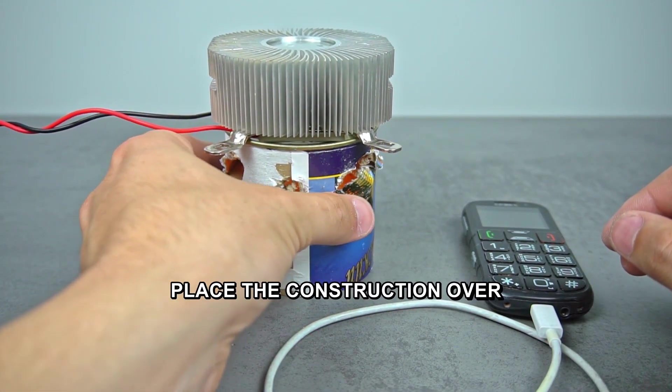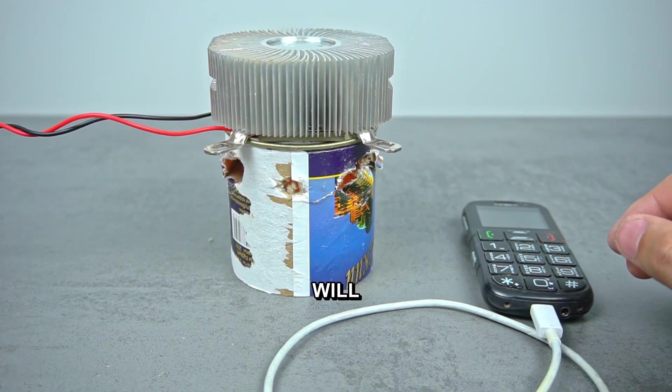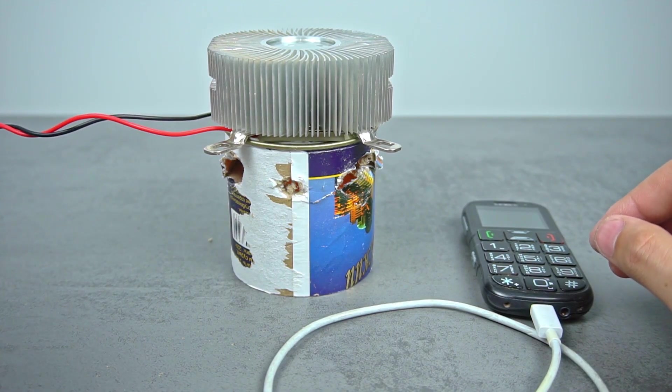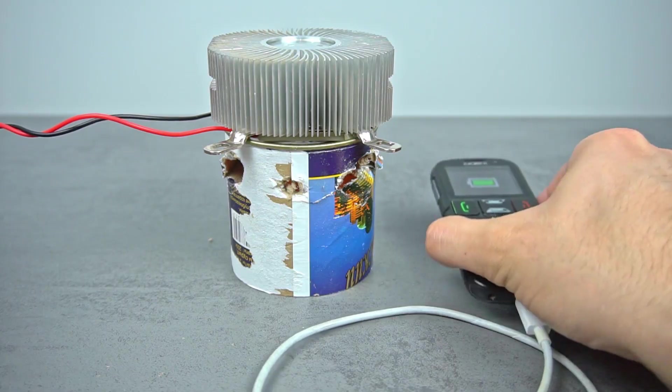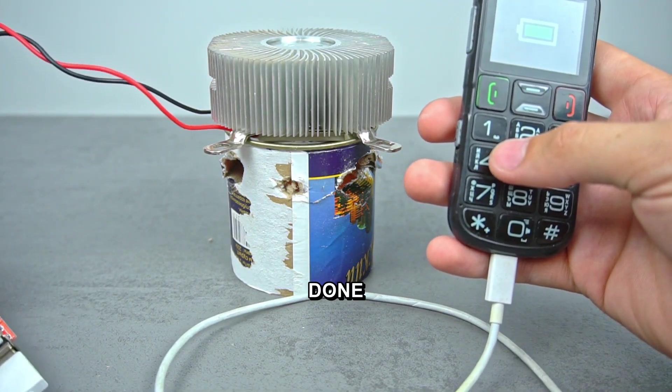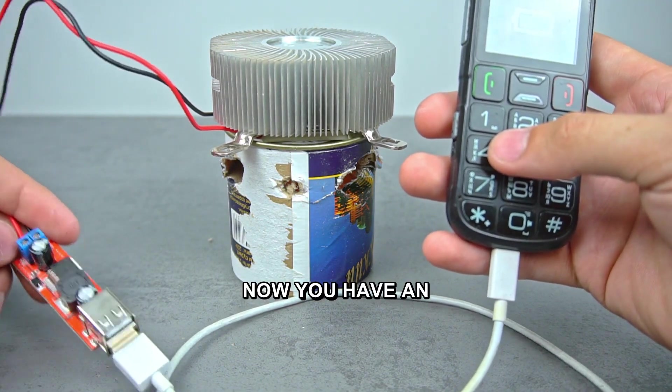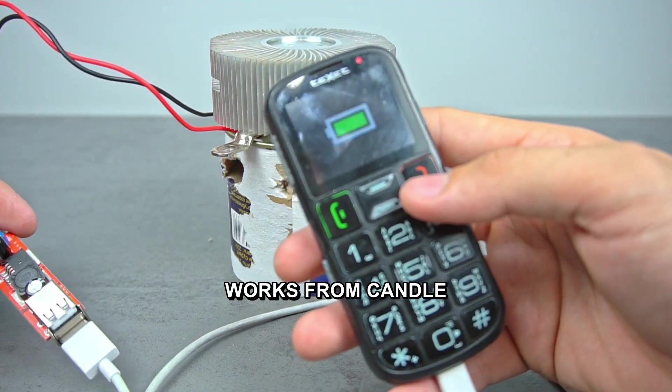Place the construction over a candle. The temperature difference will make the Peltier element generate electricity. Done! Now you have an unusual charging device that works from candle heat.